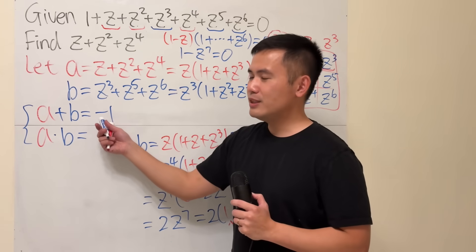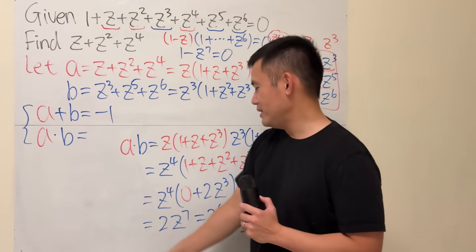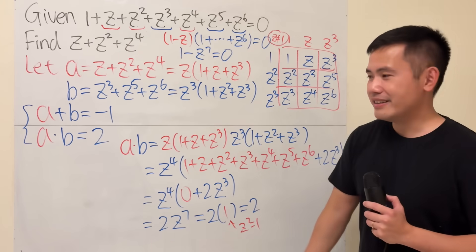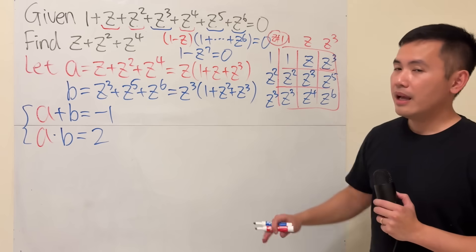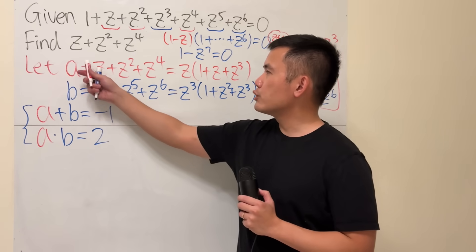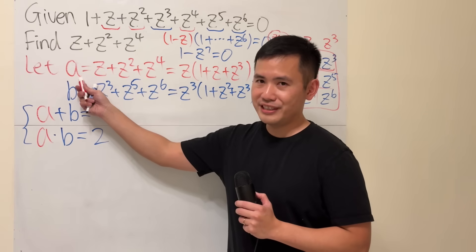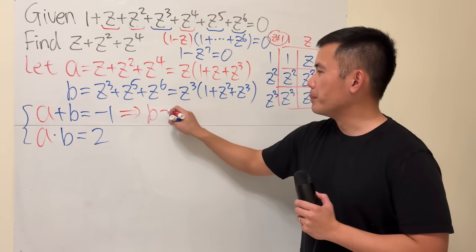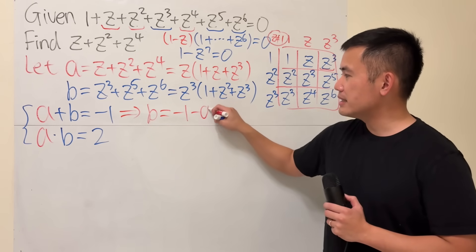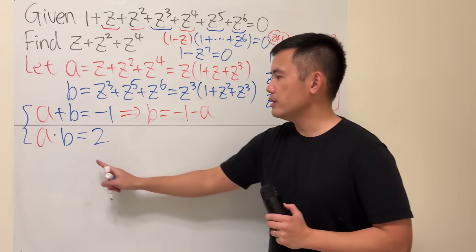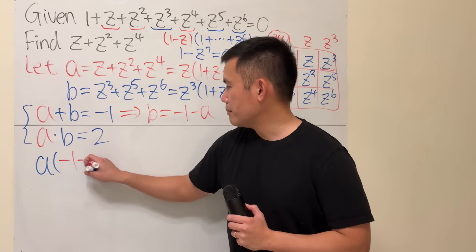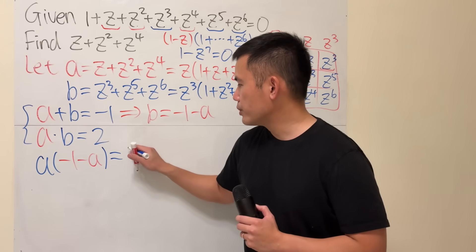Coming back here, a plus b is equal to negative 1. a times b is just nicely equal to 2. Now, we just have to solve that. And right here, keep in mind, we are trying to figure out what a is. So, I will be looking at this equation. Subtract a to both sides. So, b is equal to negative 1 minus a. And then plugging this into this b right here.